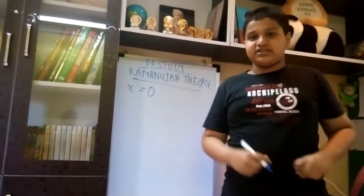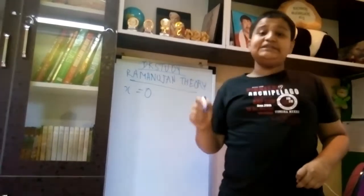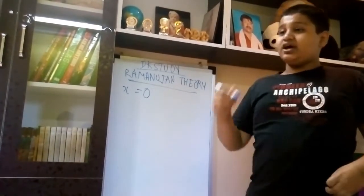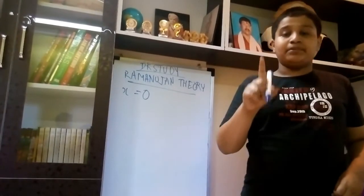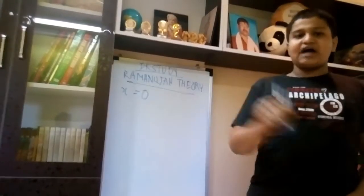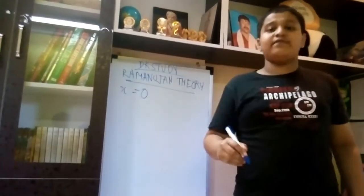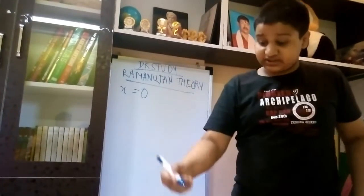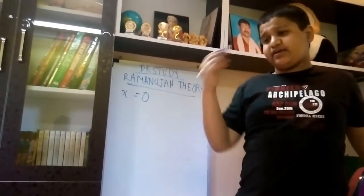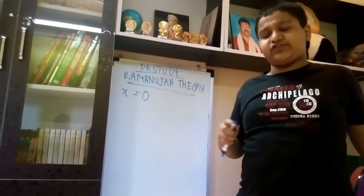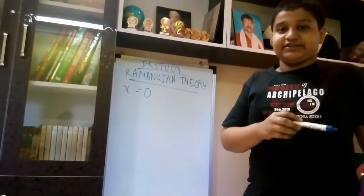The teacher asked one question to all of his students and told that if 7 apples are given to 7 students, then each student will get 1 apple. So then, Ramanujan asked one question that if 0 apples are given to 0 students, then also will each student receive 1 apple? Everyone was downstruck by that question.